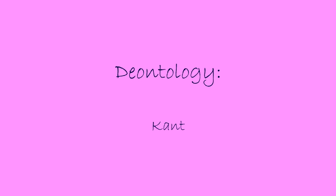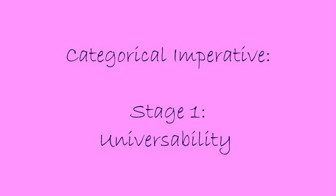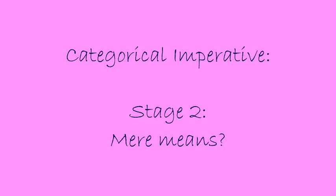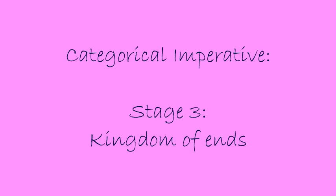The second theory we'll be reviewing is deontology, proposed by Kant, whose categorical imperative has a three-stage way of analysing decision-making. The first being universability: can this decision or whatever you're proposing be made universal — can it be applied everywhere? The second stage is: by implementing this decision, are you using somebody or a group of people as a mere means — are you taking advantage of them? The third stage is the kingdom of ends, which, if you've passed the first two stages, is your final test to see whether your decision is morally correct.